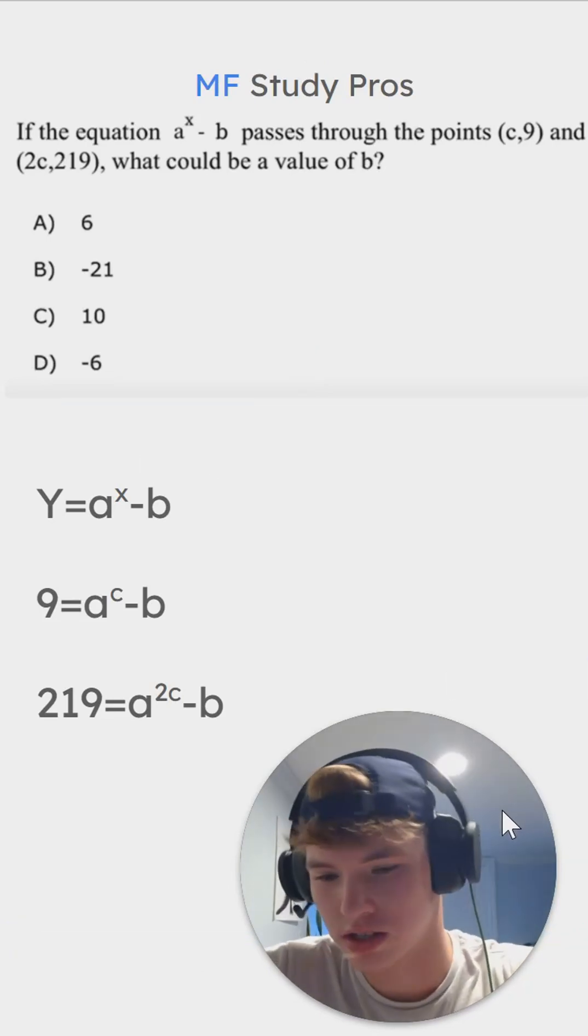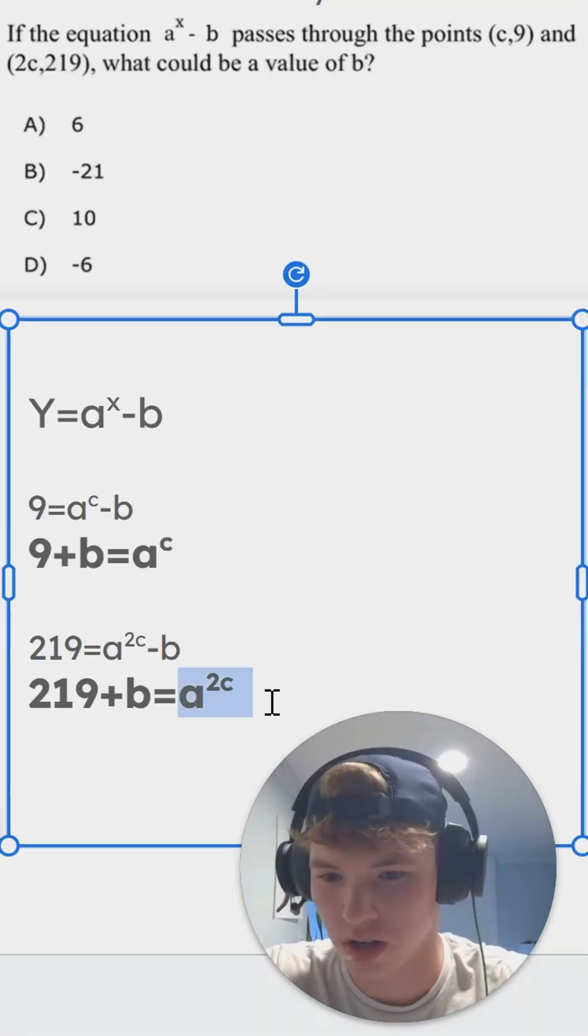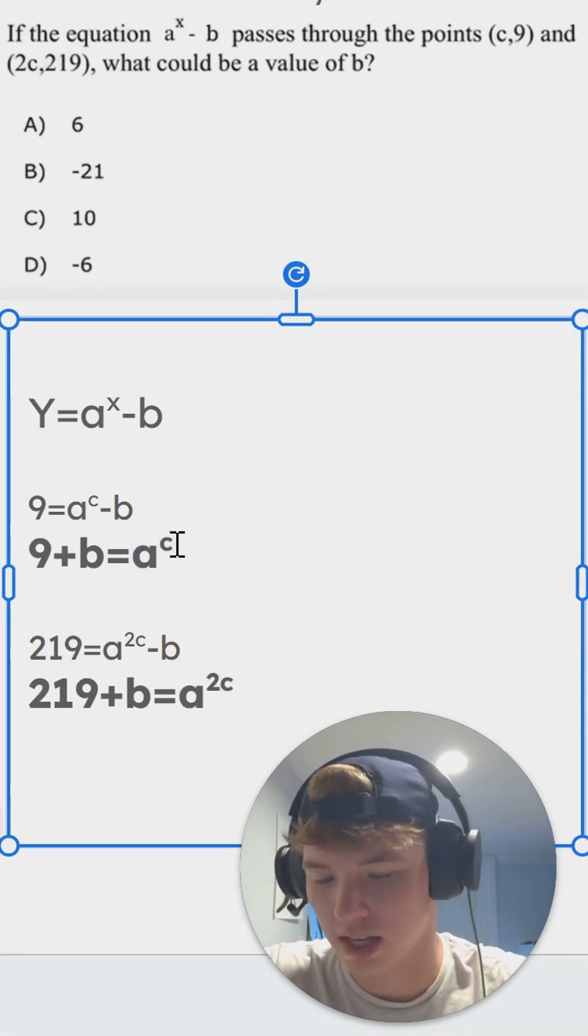So now you're looking at this and you see you have three constants. Looking at these two equations, I can already see what I'm going to do here. We have A to the 2C on this side, and we have A to the C on this side. To get this to equal A to the 2C, we need to square both sides.